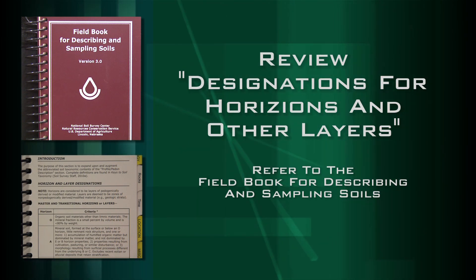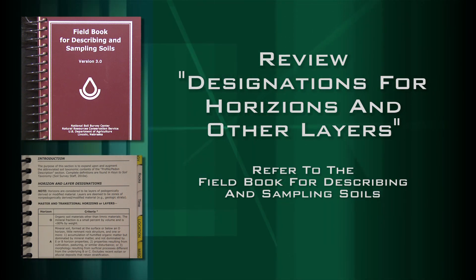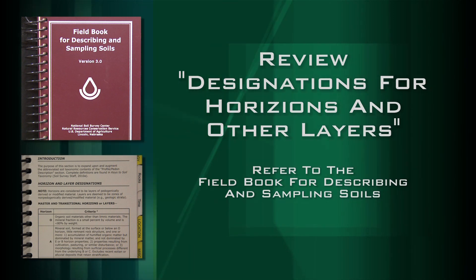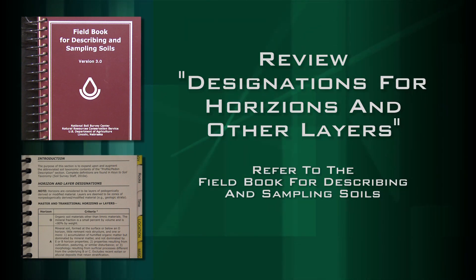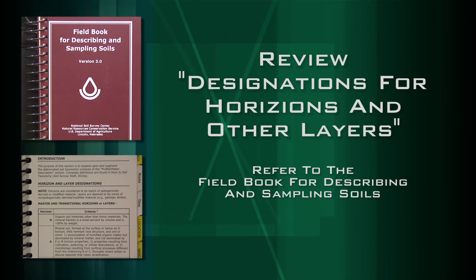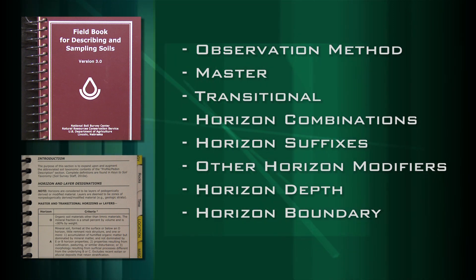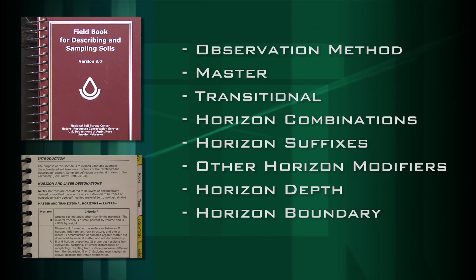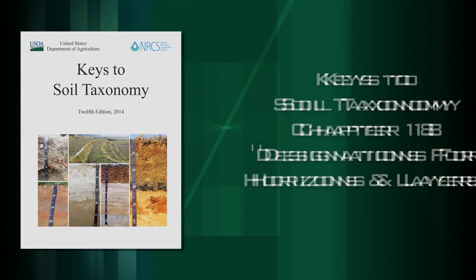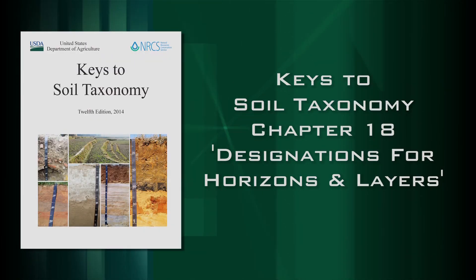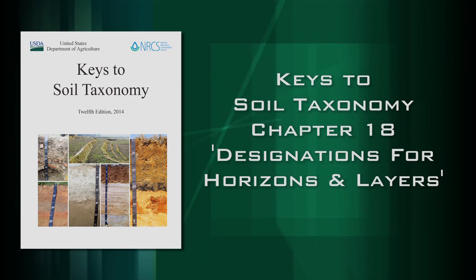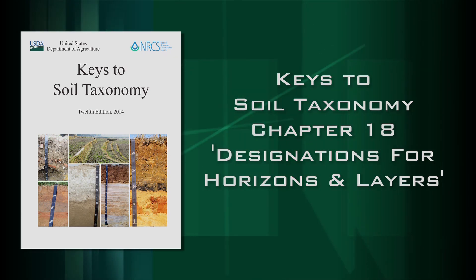Before you get started in the field, take the time to review the sections of the soil survey manual on designations for horizons and other layers. Refer to the field book for describing and sampling soils, focusing on the charts and discussions for the observation method, master, transitional and common horizon combinations, horizon suffixes, other horizon modifiers, horizon depth, and horizon boundary. The most up-to-date nomenclature for describing soil horizons will be found in the current edition of the Keys to Soil Taxonomy, Chapter 18, Designations for Horizons and Layers.